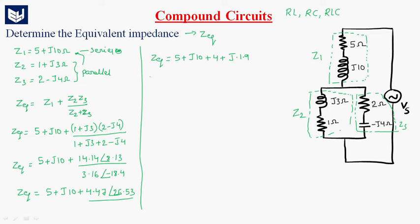We will get Z equivalent equal to 5 plus J10 plus 4 plus J1.9. The Z equivalent will be simply adding the real terms: 5 plus 4 is 9, so 9 plus J11.9.